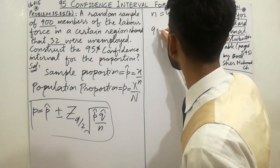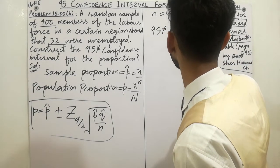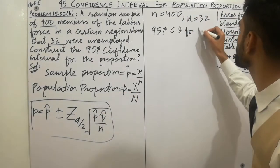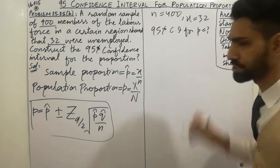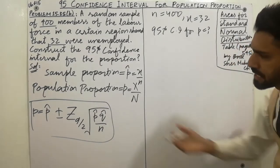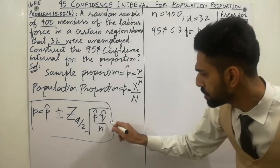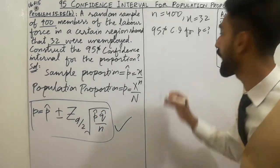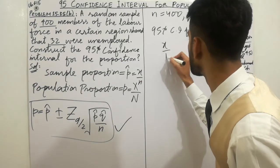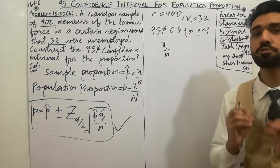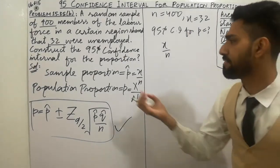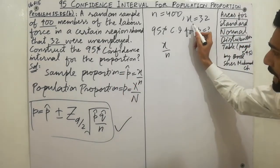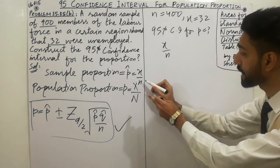You have to construct the 95 percent confidence interval for the proportion. The formula is already given here - p equals p hat. Here you have to calculate x over n, which is equal to p hat. What is the formula? Sample proportion - very simple, x over n which is equal to p hat.